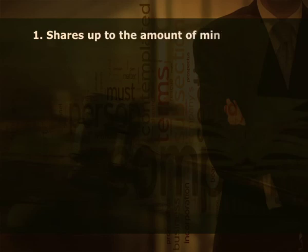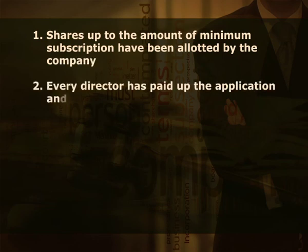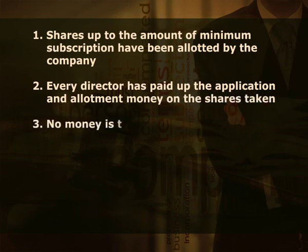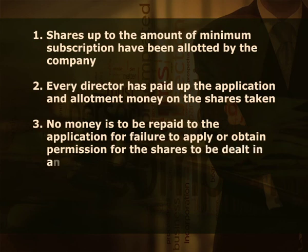The next topic is commencement of business by a company. A private company can begin its business immediately after getting the certificate of incorporation. Whereas a public company cannot start its business after incorporation unless it has obtained the certificate to commence business, by complying with the provisions of section 149. If the company has share capital and a prospectus is issued, the company cannot commence its business until: first, shares up to the amount of minimum subscription have been allotted; second, every director has paid up the application and allotment money on the shares taken; third, no money is to be repaid to applicants for failure to obtain permission for the shares to be dealt in on any recognized stock exchange.